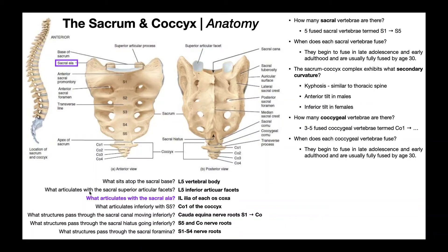What structures articulate with the sacral ala? Here's the left ala and the right ala. The structures that articulate with those are the ipsilateral ilia of each os coxa. The os coxa is one half of the pelvis, so the right ilium articulates with the right ala of the sacrum, and the left ilium articulates with the left ala of the sacrum.